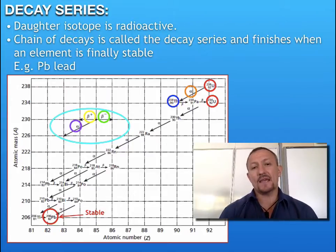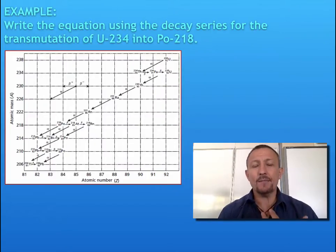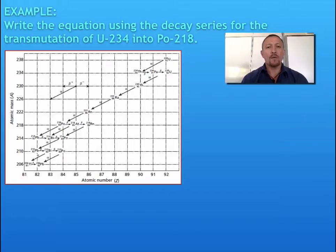Let's look at an example we can work through. We've got the same diagram, and we're going to write the equation for the nuclear transmutation of uranium-234 into polonium-218. First we identify where those elements are on the graph. There's uranium-234 and there's polonium-218. So what's in between?